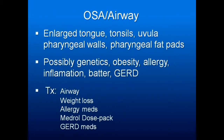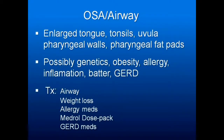OSA is about the airway: enlarged tongue, tonsils, uvula, pharyngeal walls, pharyngeal fat pads, possible genetics of obesity, allergy, inflammation, battering the tissues with snoring causing them to enlarge, and GERD, which inflames the tissues and makes them swell.